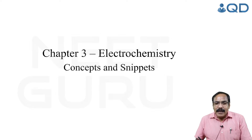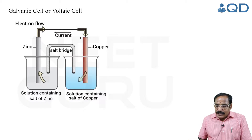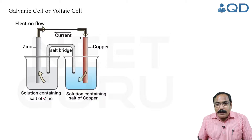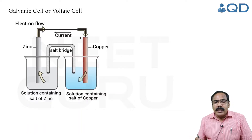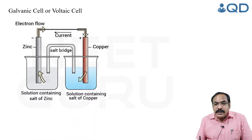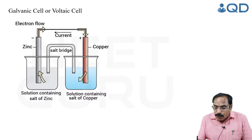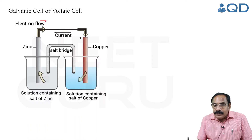Now let us see a typical galvanic cell — the Daniel cell. It consists of a zinc rod dipped in one molar zinc sulfate solution as the anodic compartment. A galvanic cell consists of two half cells: the anodic half cell and the cathodic half cell. At the anodic half cell, oxidation takes place and electrons are continuously released. Electrons flow from anode to cathode, while the flow of current is from cathode to anode.